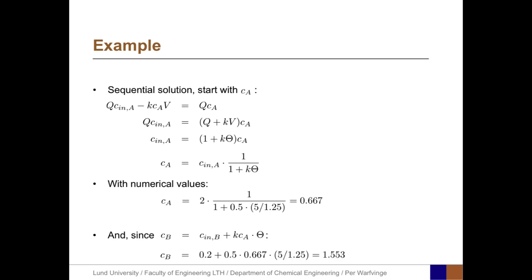We can now evaluate C_B. C_B = C_in,B + K × C_A × θ. With numbers: C_B = 0.2 + 0.5 × 0.667 × (5/1.25) = 0.2 + 1.333 = 1.533 mol/m³.